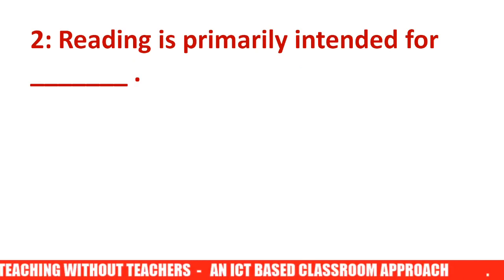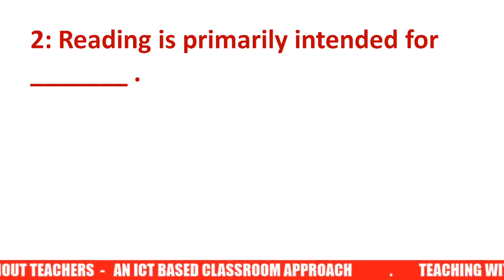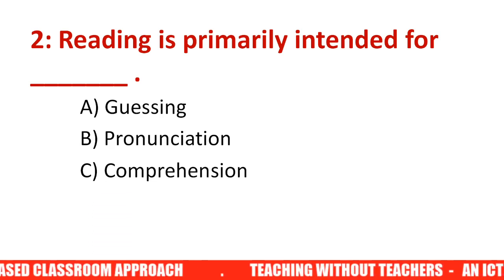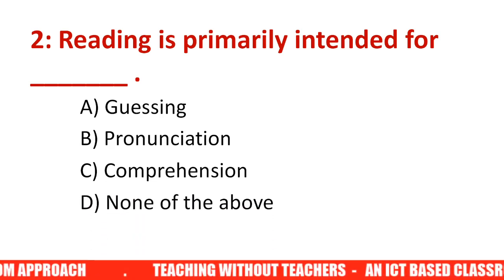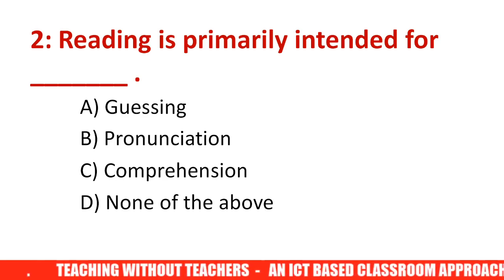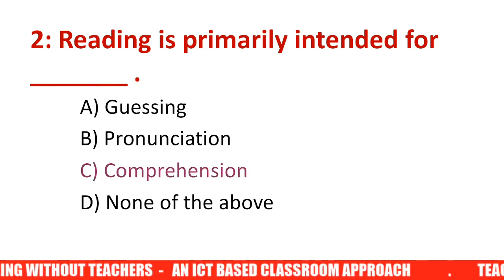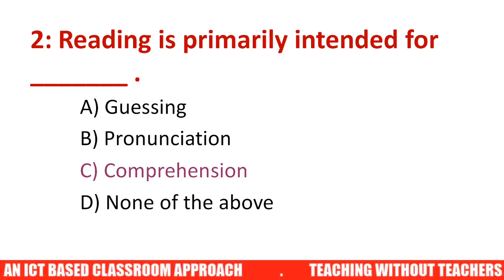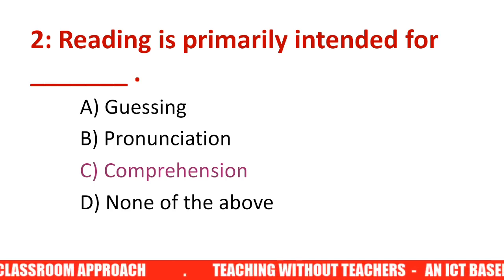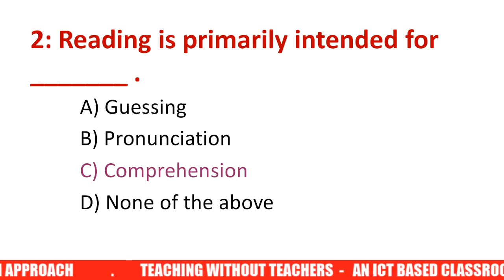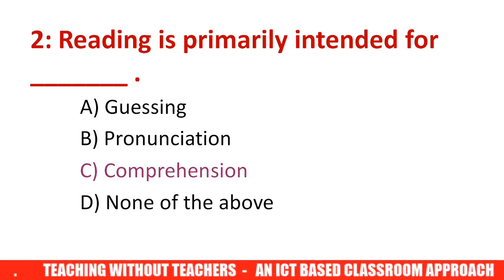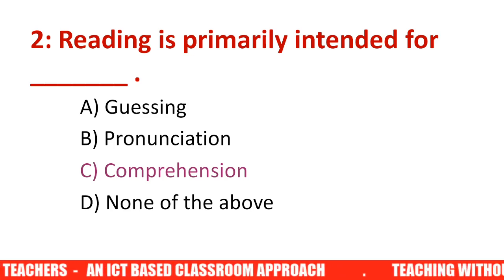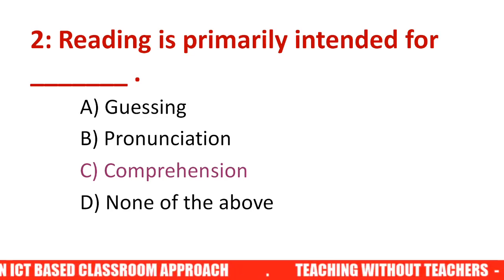Question number two: Reading is primarily intended for dash. Options are: A) guessing, B) pronunciation, C) comprehension, D) none of the above. The answer is C — comprehension. Basically, why do we read? We don't read to guess meaning or just for pronunciation. Our purpose is to understand the text, whether it is a story or a poem. Therefore, comprehension or understanding is the answer.